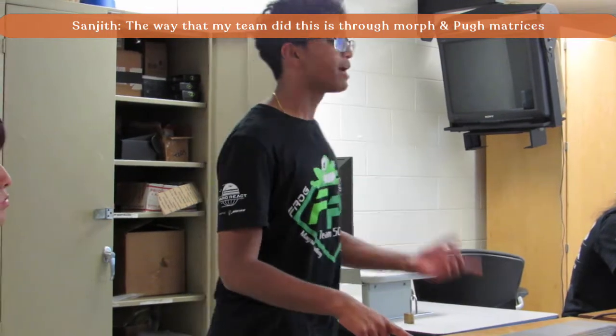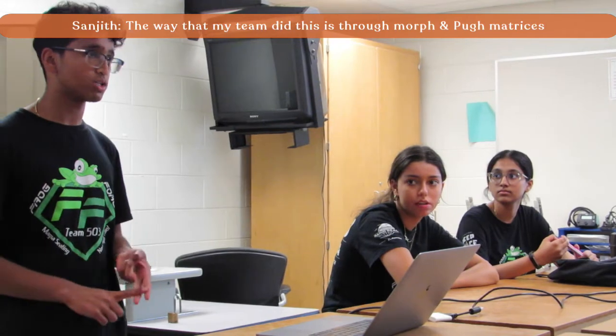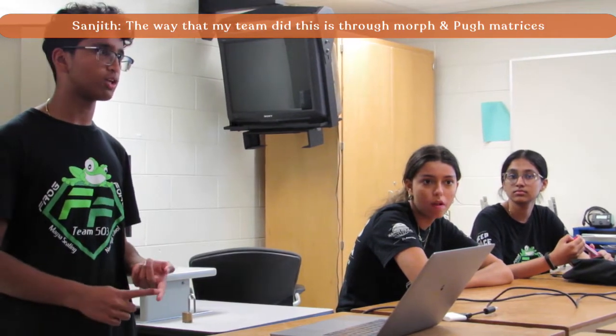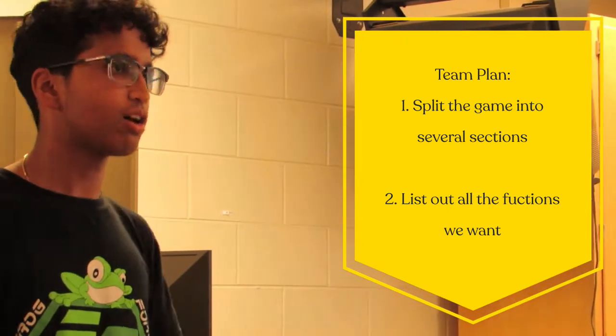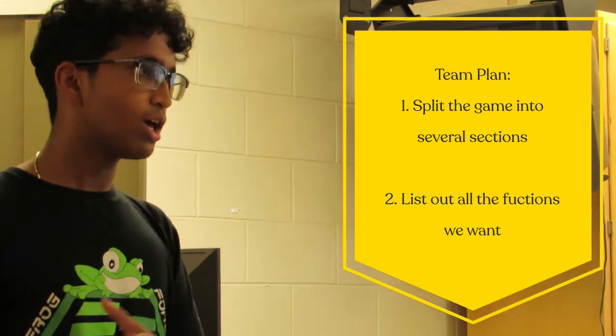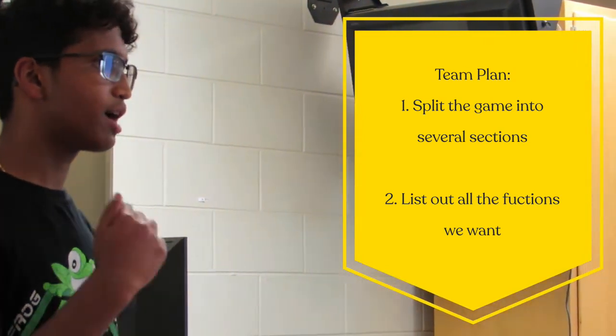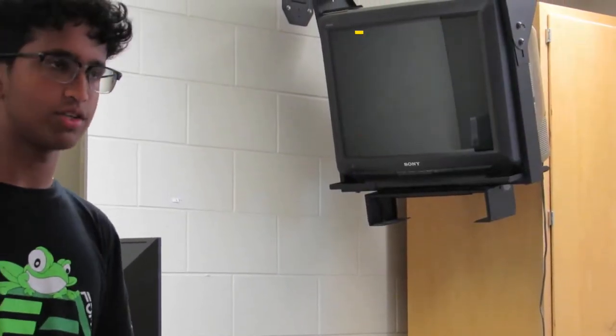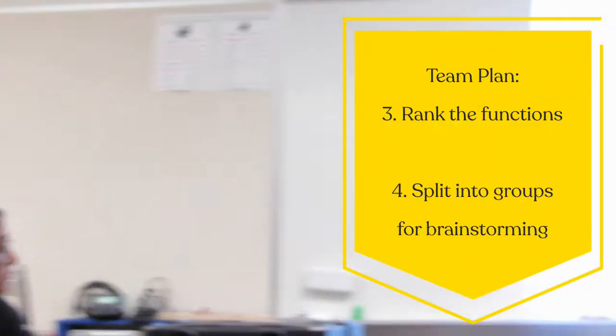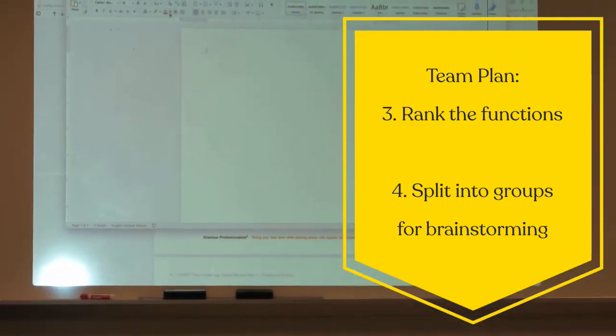The way my team used to do this is through the Morph Matrix and the Pew Matrix. We can split the game up into different sections - Auton, Teleop, and Endgame - then list out all the things we want our robot to be able to do and rank them. It's really similar to the first step of FFFT. After we come up with our list of functions and rank them, we're going to split up into groups.